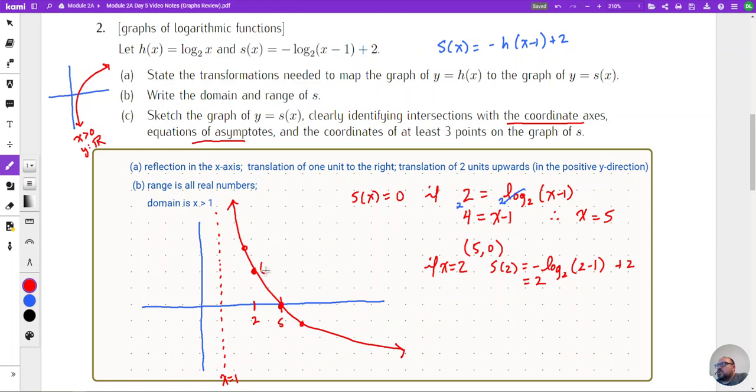So we might say that this point right over here is the point two comma two, so I also have this point two comma two on this graph.